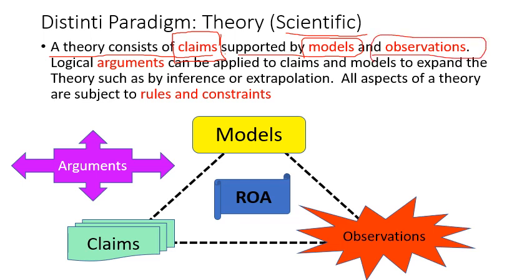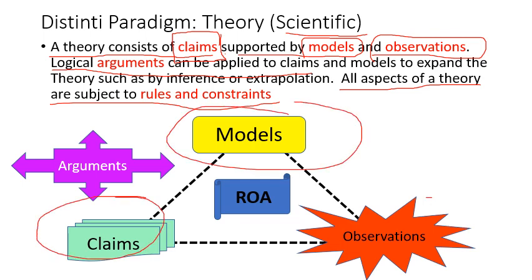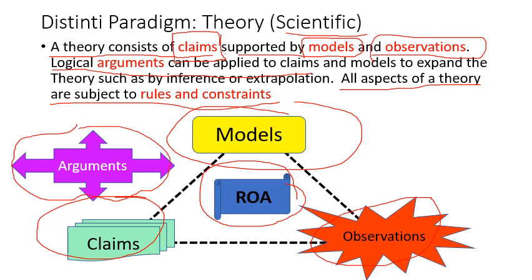And all of this is, can be, logical arguments can be used, can be applied to claims and models to expand the theory, such as through inference or extrapolation. And we're going to give examples of this if you don't understand the language. And the important part here, all aspects of a theory are subject to rules and constraints. And so here we have claims, models, and observations are highly interrelated by these three dashed lines. The whole system is consistent with the rule, must be consistent with the rules of acquisition. And this argument box, I'm not going to show it in any of the later videos, but this applies to everything as well.